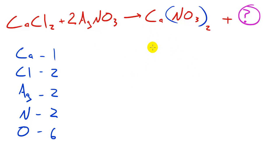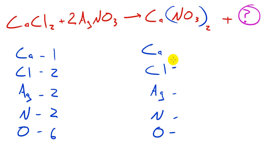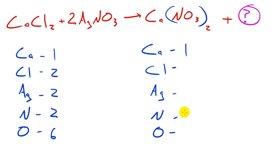Now let's figure it out for the right side: calcium, chlorine, silver, nitrogen, and oxygen. Remember, the chemicals aren't going to change — they only change in a nuclear reaction. Since we don't know what the missing product is yet, let's figure out what we do know. We have one calcium, no chlorine yet, no silver yet, two nitrogens — because there's one nitrogen in NO₃ and we have two of them — and six oxygens, because three oxygens times two molecules gives us six.